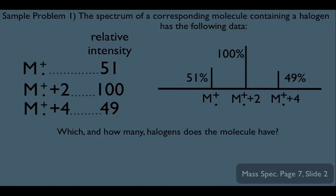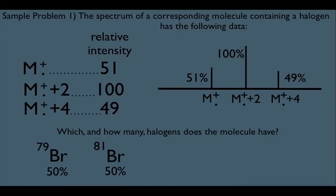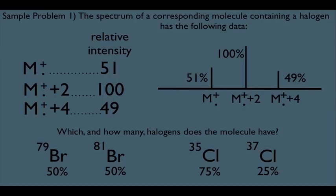Let's answer which halogen this is. Br has a roughly 50-50 relative abundance, while Cl is roughly 75-25. Right away we should know the molecule doesn't have one halogen — it more likely has two, because with one halogen we'd only see M and M-plus-2 peaks, not an M-plus-4. The 1-to-2-to-1 ratio of our peaks is more consistent with Br than the 3-to-1 ratio of Cl. Let's investigate whether the molecule has two Brs.